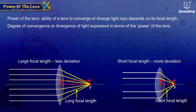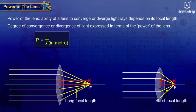Thus, power of a lens is defined as the reciprocal of its focal length in meters. That is, power of lens equals 1 upon focal length.